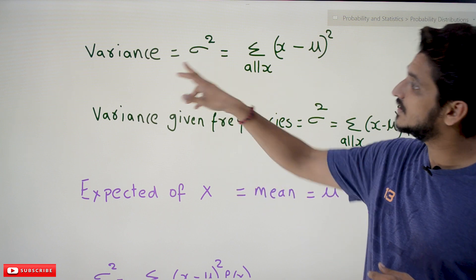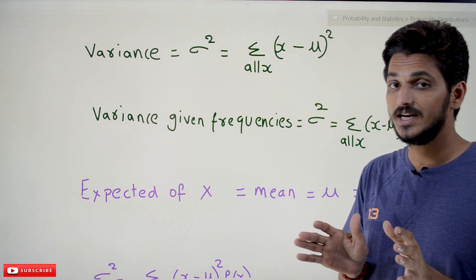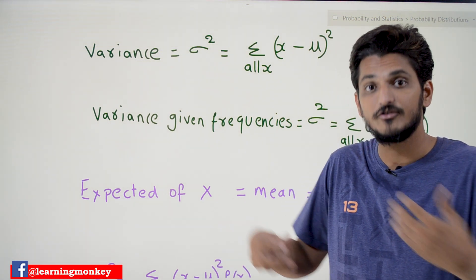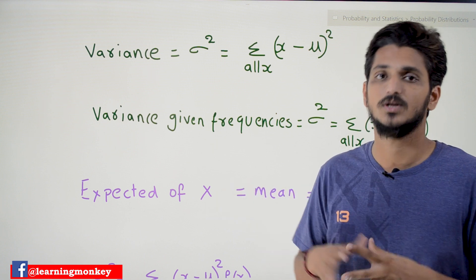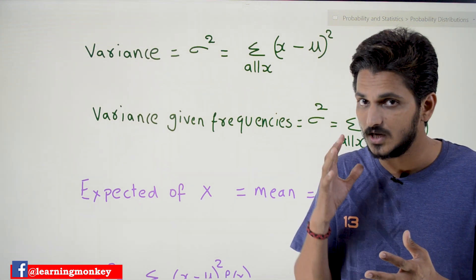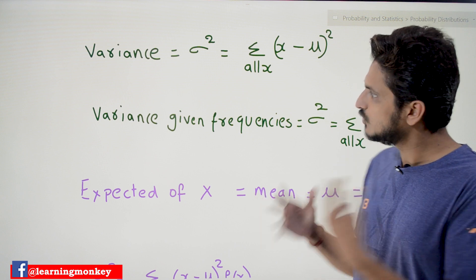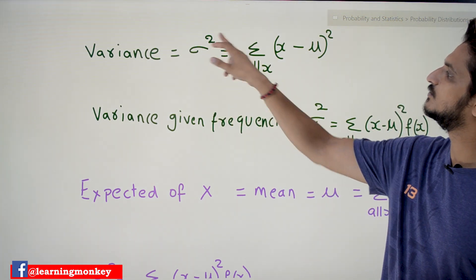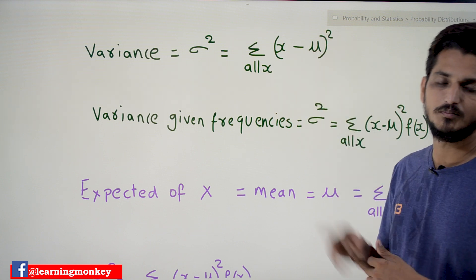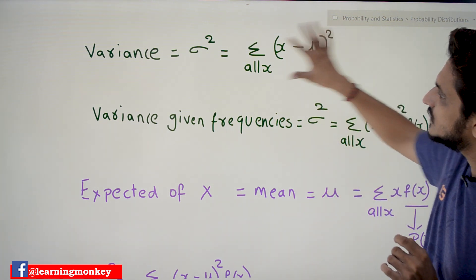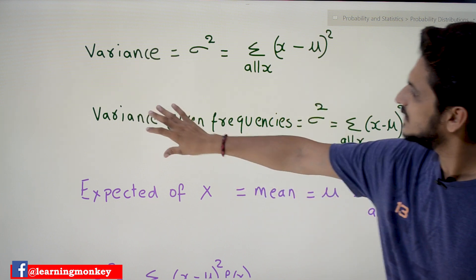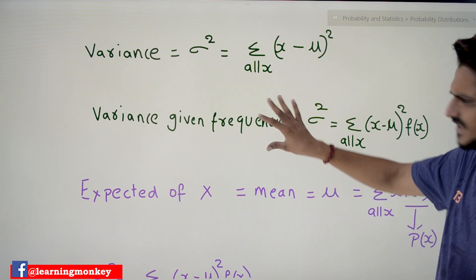In our beginning classes when we discussed about measure of dispersion, variance and standard deviation are used to find the measure of dispersion — that is, how much our data is spread from the mean. This mean value and measure of dispersion value are very important in probability distributions. So the variance is given as sigma squared, which equals the sum over all X of (X minus mu) squared, where mu means the mean value. This is the equation to find the variance of data points.